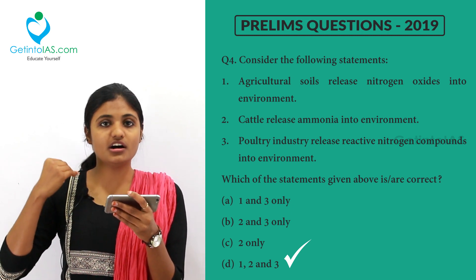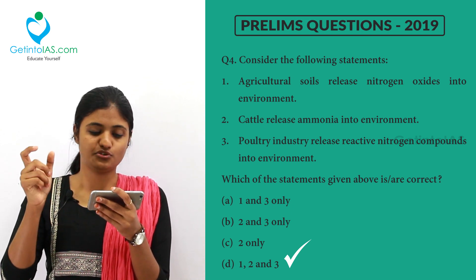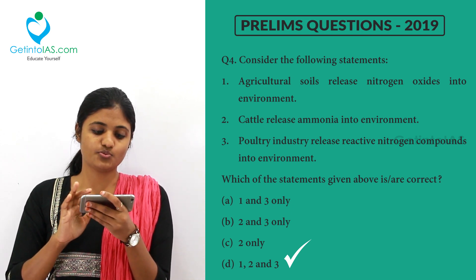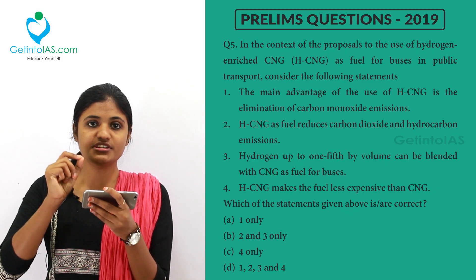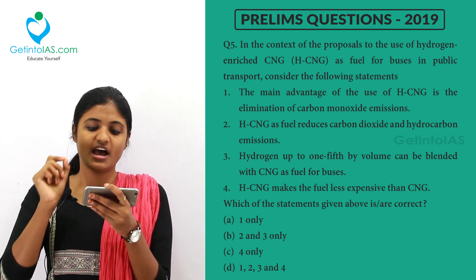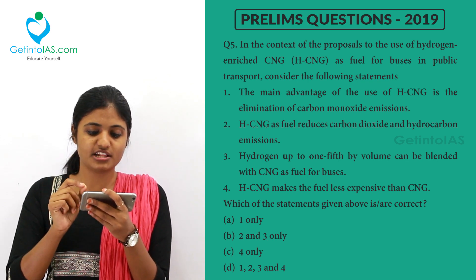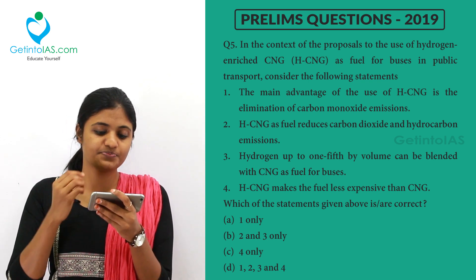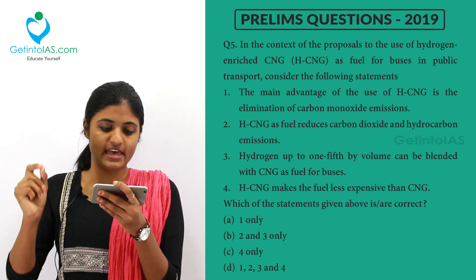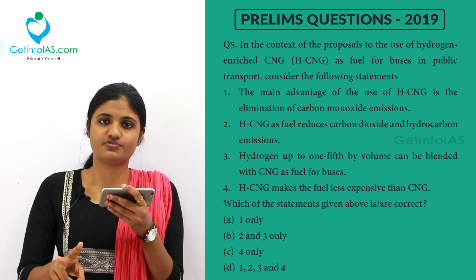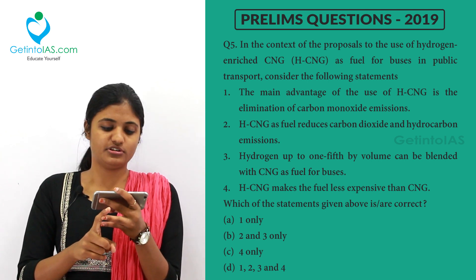The nitrogen coming out of poultry reacts with other gases present in the atmosphere, making it reactive nitrogen. So all three options are correct in this question. Moving to the next question: in the context of the proposal to use hydrogen enriched CNG — that is HCNG — as fuel for buses in public transport, consider the following statements. CNG is compressed natural gas and HCNG is hydrogen enriched compressed natural gas, giving us two types: plain CNG and hydrogen enriched CNG.